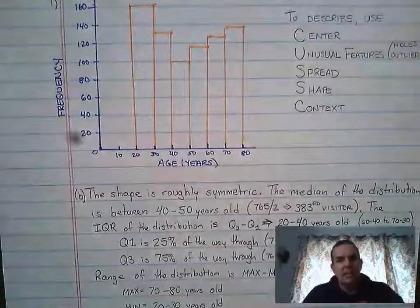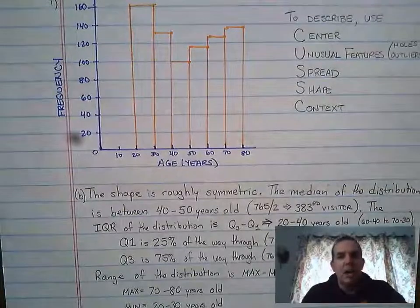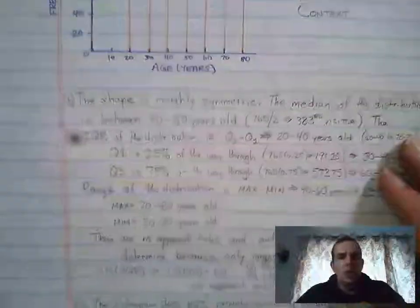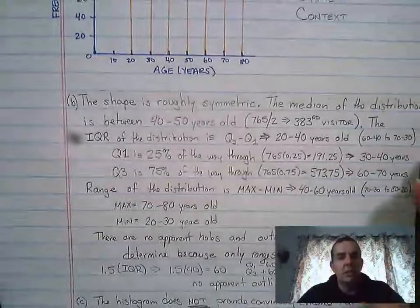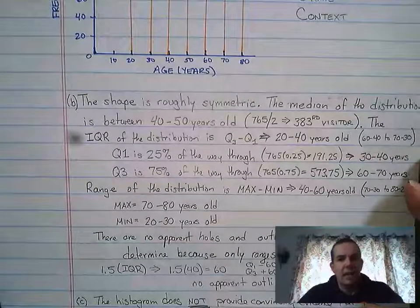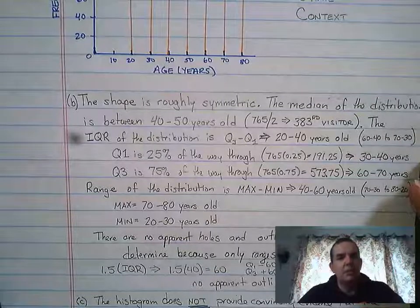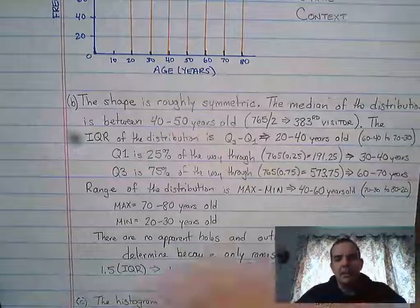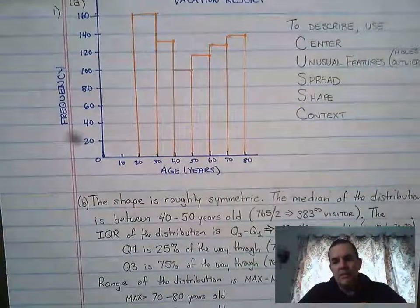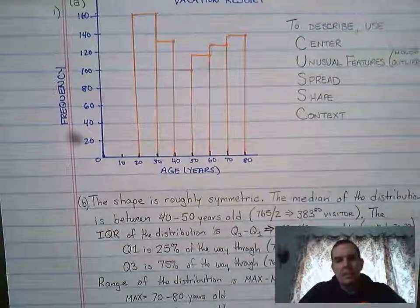So at the end of the day, what we want to say is this thing has a median of 40 to 50 years old with a range of 40 to 60 years old and no apparent holes, and outliers are difficult to compute from this. That should be how you'd enter that again. Remember your acronym CUSSC, C-U-S-S with C for context.